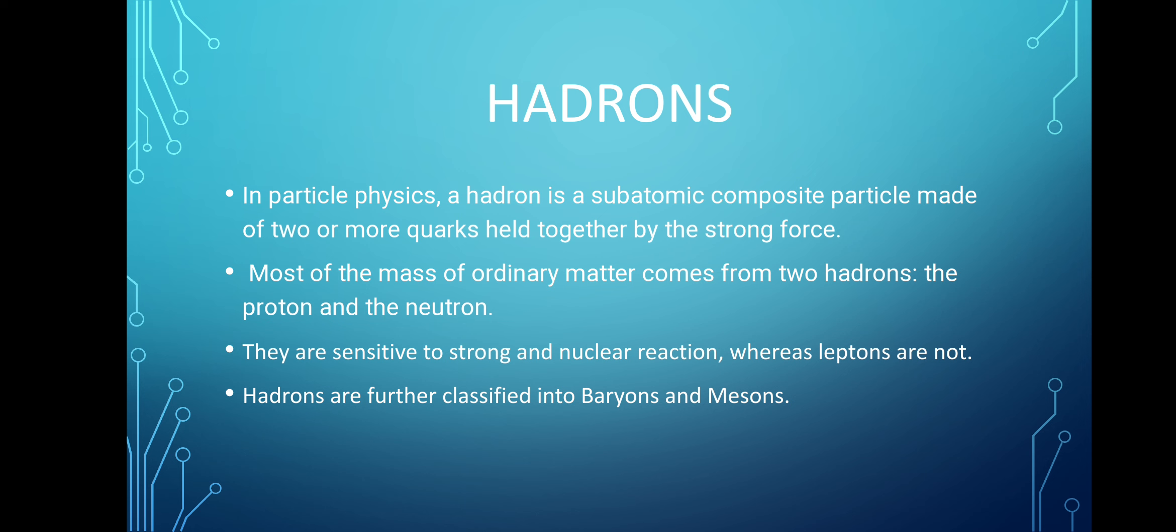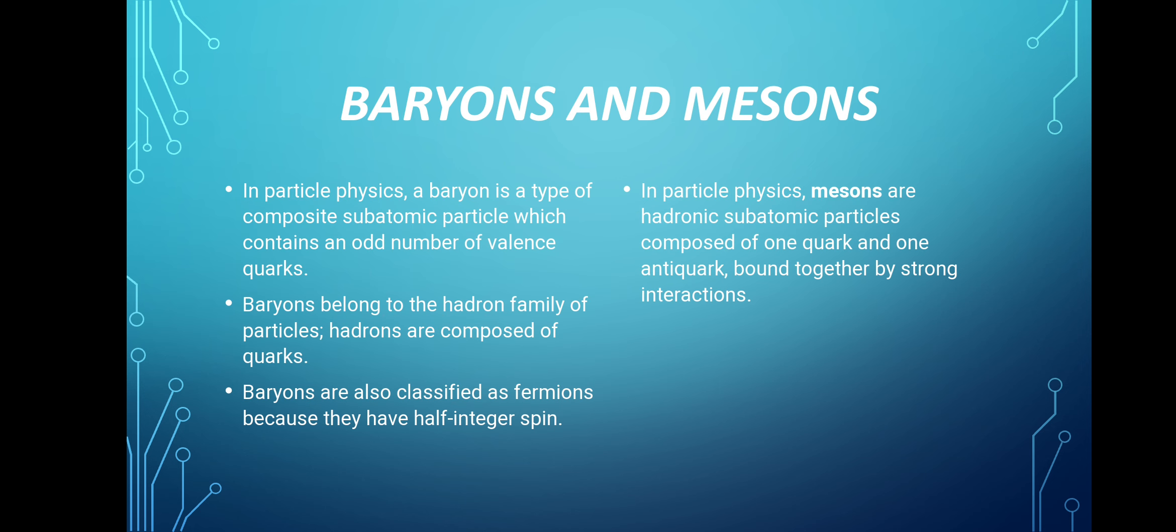Now Hadrons are of 2 types: Baryons and mesons. A Hadron containing an odd number of valence quarks is called Baryons. Please note that Baryon is a Hadron which in turn is a fermion and have half-integer spin. Mesons are particles which contain a quark and an anti-quark. They are also held together by the strong interaction.